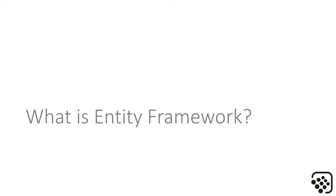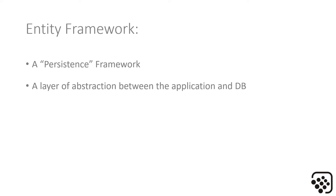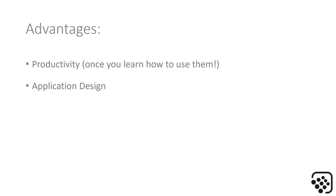So what is Entity Framework? It's what we call a persistence framework — it's a layer of abstraction between the application and the database. You may also hear it referred to as an object relational mapper, or ORM. The advantages to using any persistence framework include productivity, application design, code reuse, and maintainability. I've put a link in this video to a great article that covers each of these items in more detail.